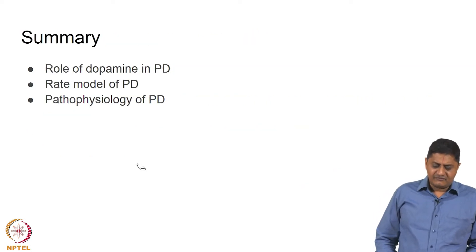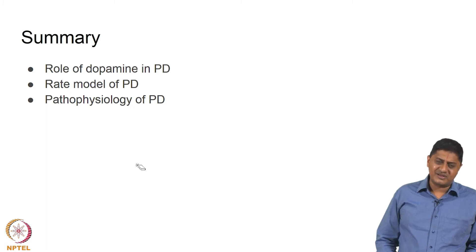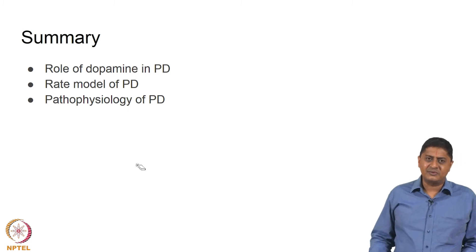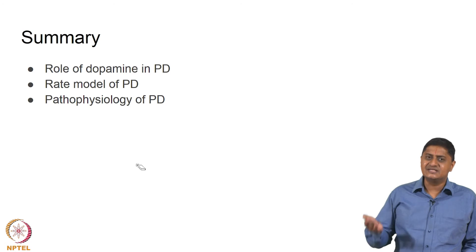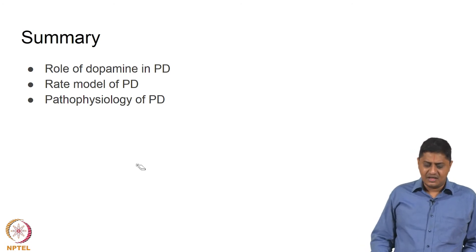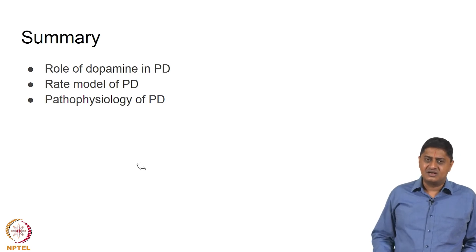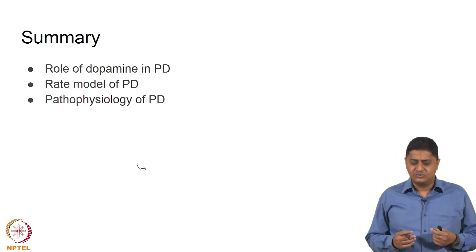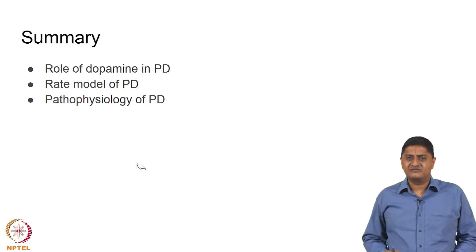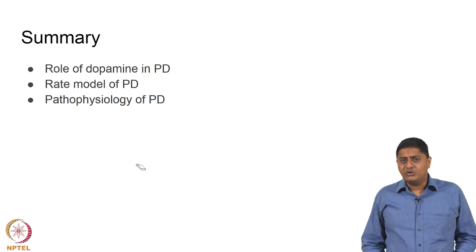In summary, we have seen the important role of dopamine in Parkinson's disease. In the rate model of Parkinson's disease, in the absence of dopamine, the indirect pathway becomes more active and the direct pathway becomes less active, essentially leading to increased inhibition at the thalamocortical level. Regarding the pathophysiology of Parkinson's disease, there are at least three different but interacting causes: oxidative modifications, mitochondrial dysfunction, and protein dysfunction. These three interact with each other to result in the group of symptoms called Parkinson's disease. A lot more remains to be understood.